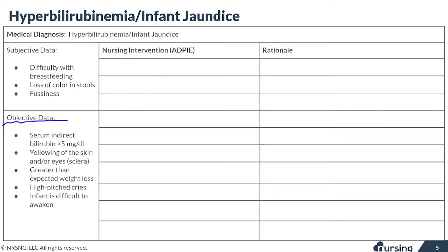Some of the most important information we're going to get in our assessment is the serum indirect bilirubin. The number that would cause us to diagnose hyperbilirubinemia is five — anything greater than five is hyperbilirubinemia. You're also likely going to see that yellowing of the skin and the eyes, and sometimes a greater than expected weight loss, meaning the baby has lost more than 10% of their body weight. Ten percent is what we expect newborns to lose, so if it's more than that, we would be concerned.